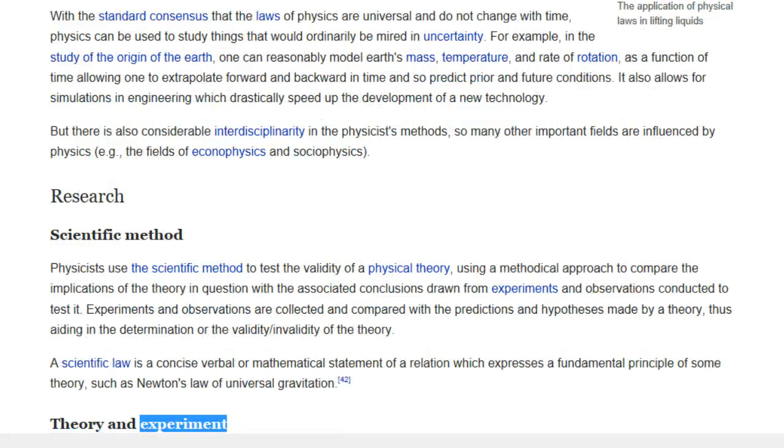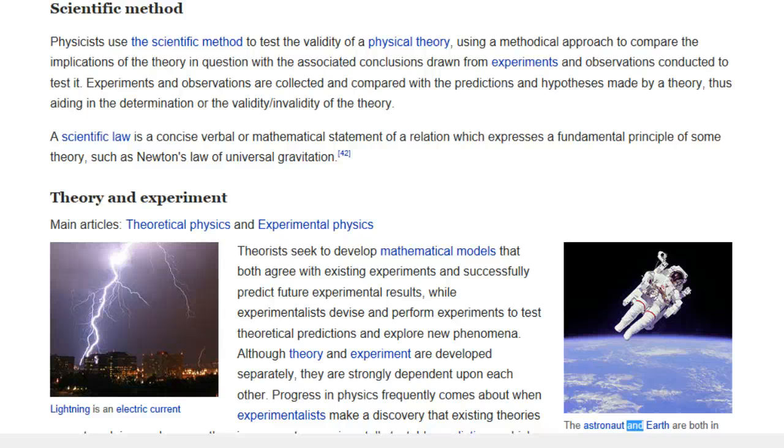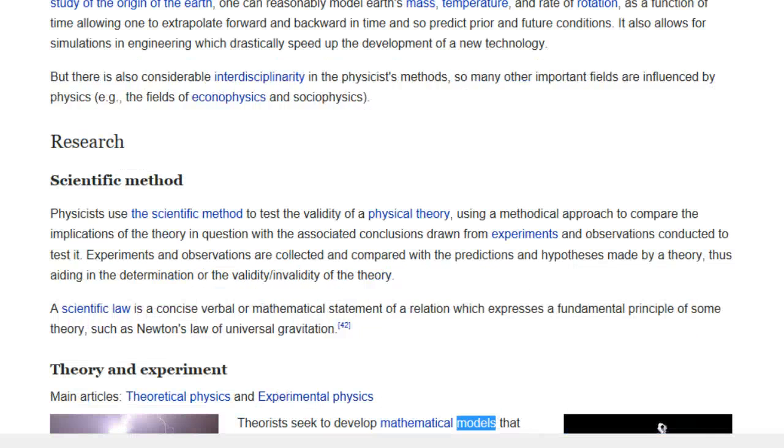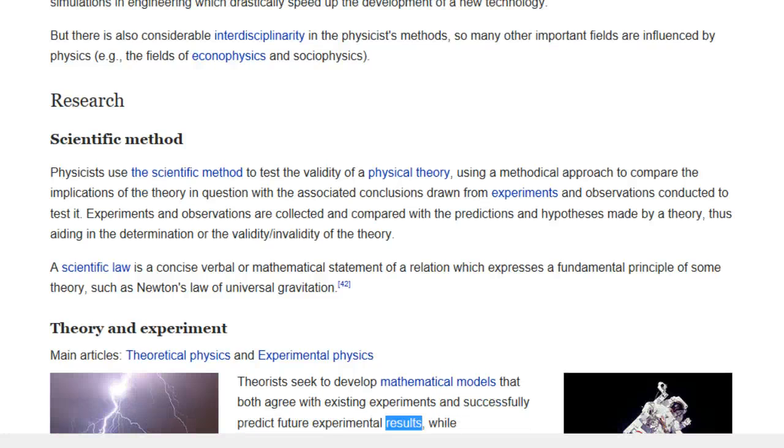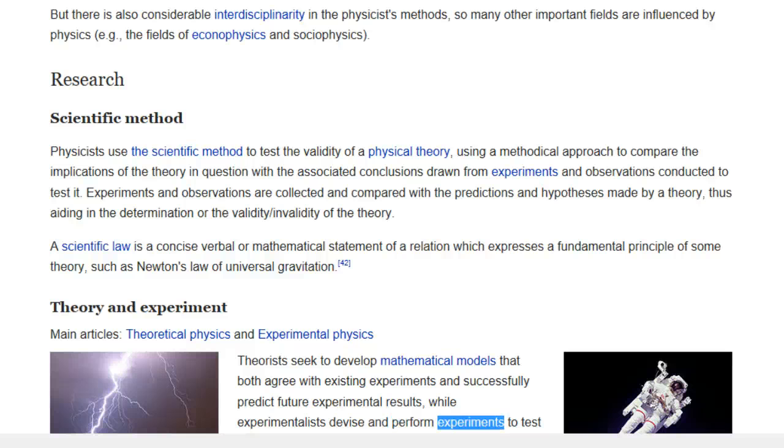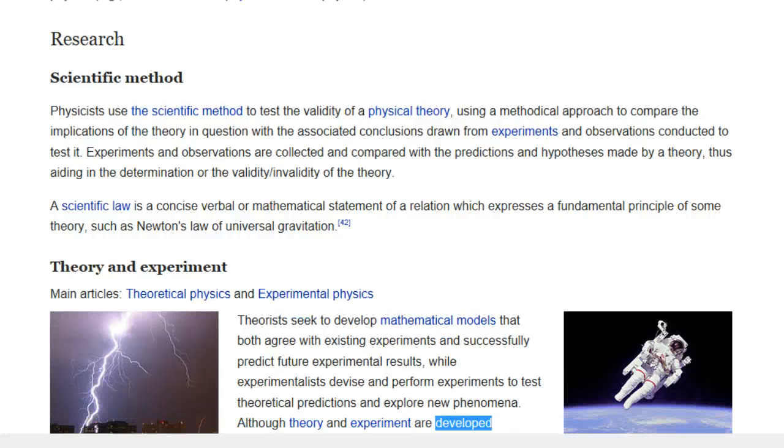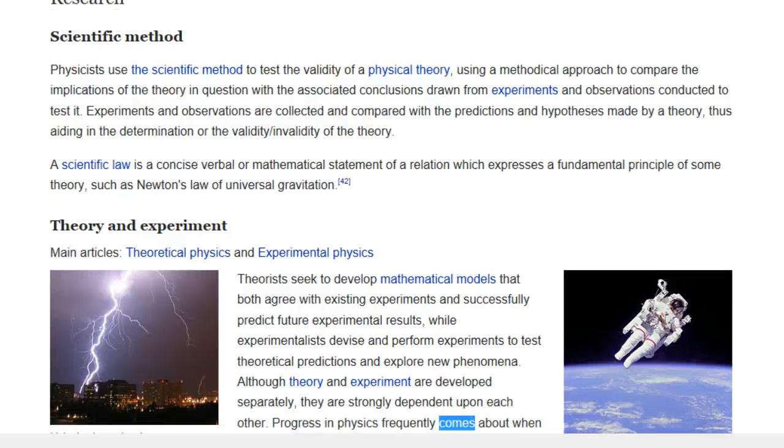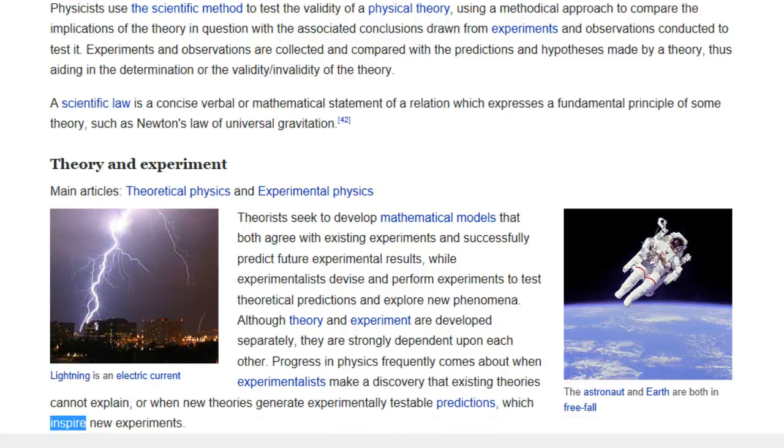Theory and Experiment. Main Articles, Theoretical Physics and Experimental Physics. The astronaut and Earth are both in free fall. Lightning is an electric current. Theorists seek to develop mathematical models that both agree with existing experiments and successfully predict future experimental results, while experimentalists devise and perform experiments to test theoretical predictions and explore new phenomena. Although theory and experiment are developed separately, they are strongly dependent upon each other. Progress in physics frequently comes about when experimentalists make a discovery that existing theories cannot explain, or when new theories generate experimentally testable predictions, which inspire new experiments.